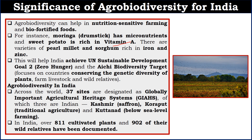Let's look at India's biodiversity in numbers. India has three Globally Important Agricultural Heritage Systems (GIAHS) — out of 37 sites worldwide. One is in Kashmir for saffron heritage, one in Koraput for traditional agriculture, and one in Kuttanad for below-sea-level farming. India has also documented 811 cultivated plant species and 902 of their wild relatives.